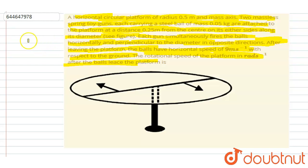So if you see here, the ball is having mass m and it moves with this velocity. The distance of the balls are at a distance of 0.25 m. So if you see...